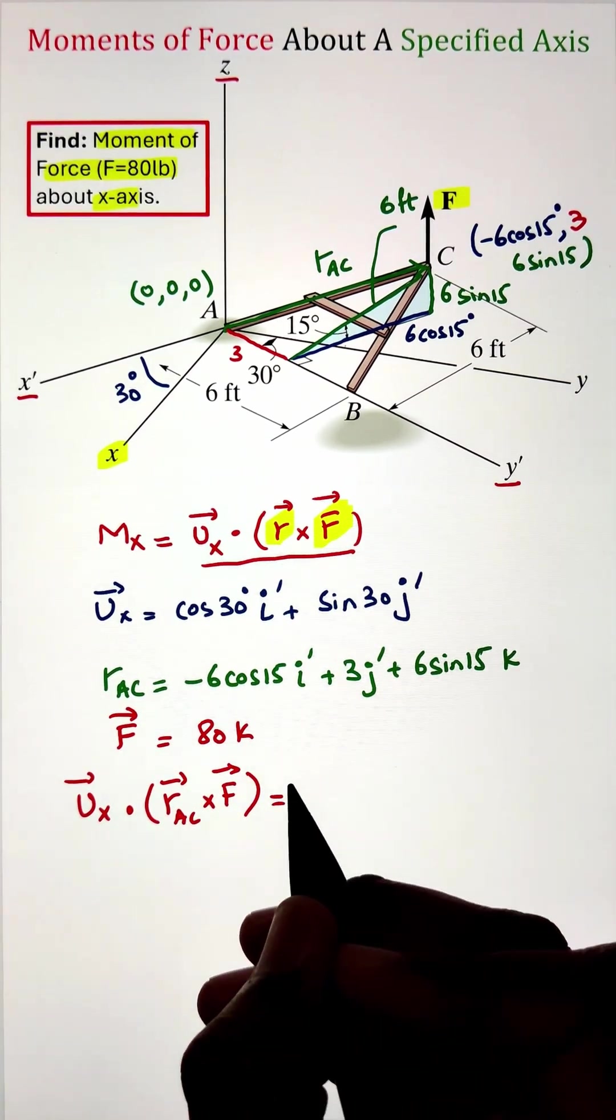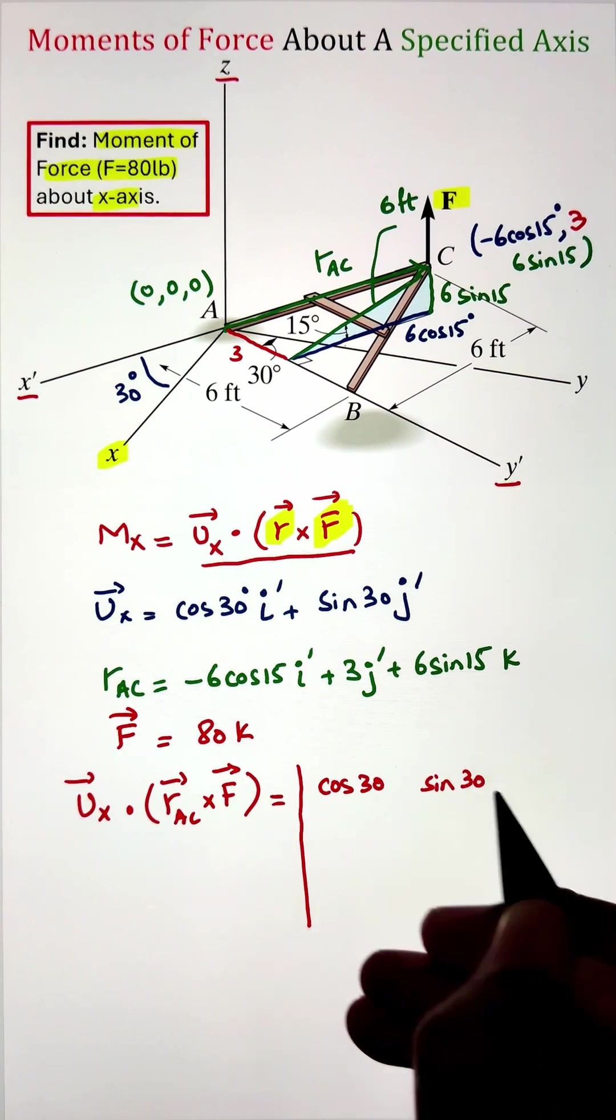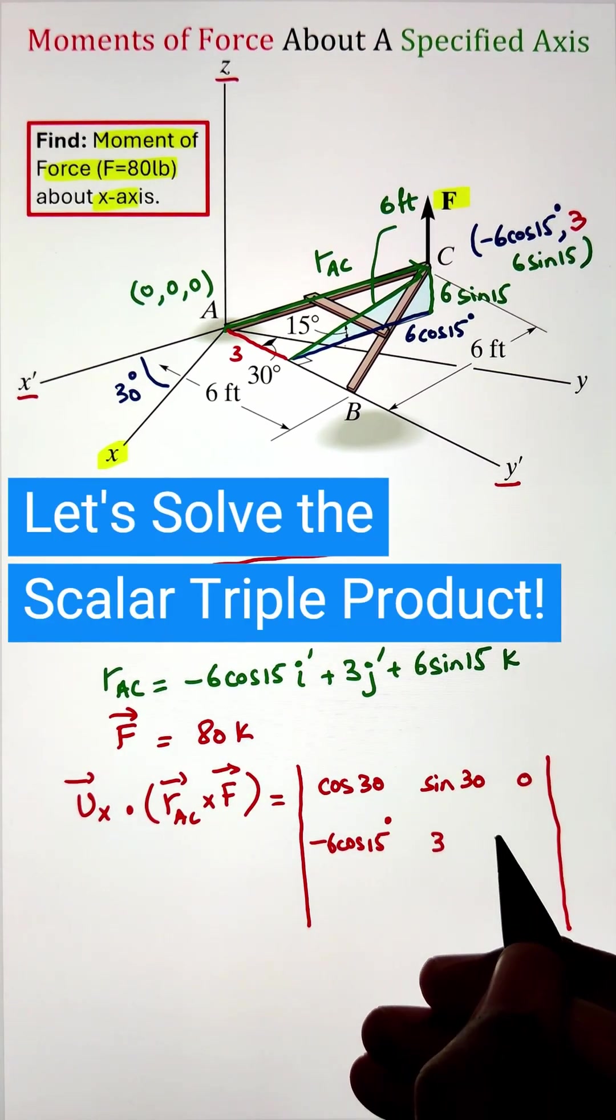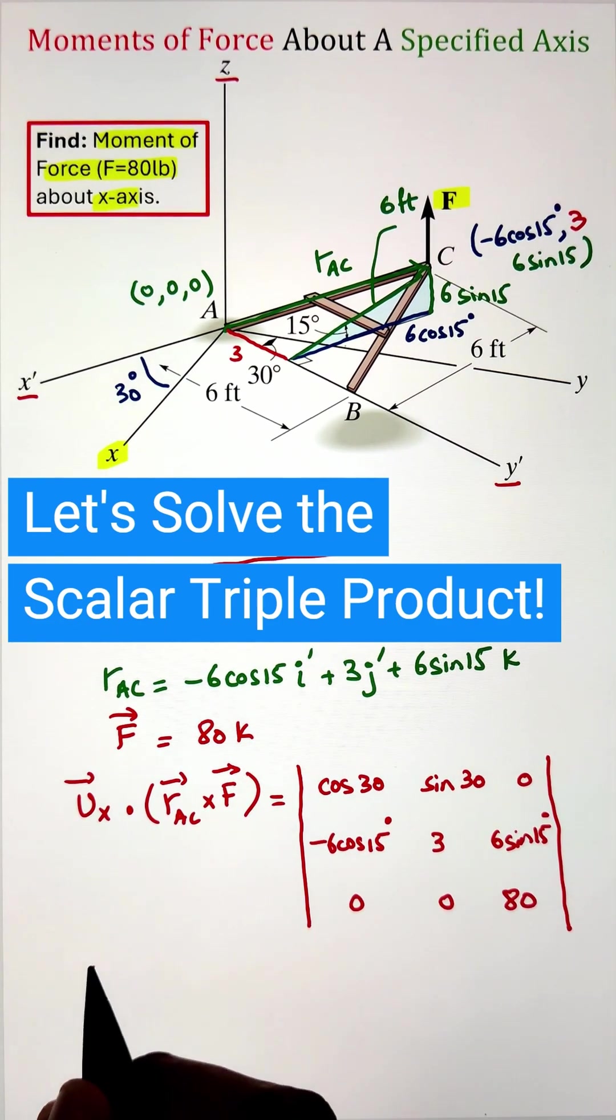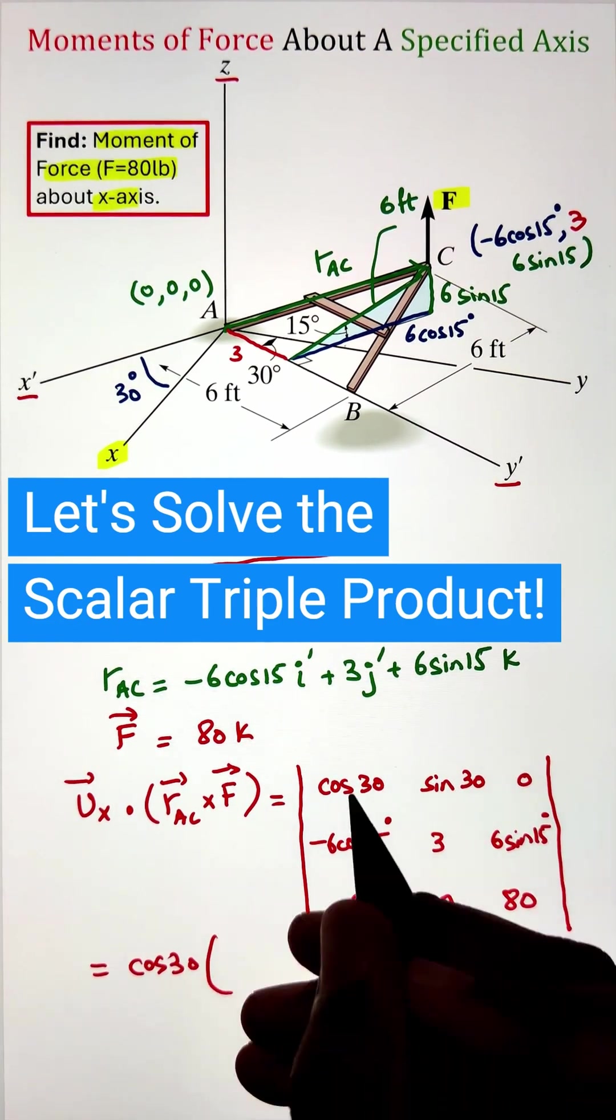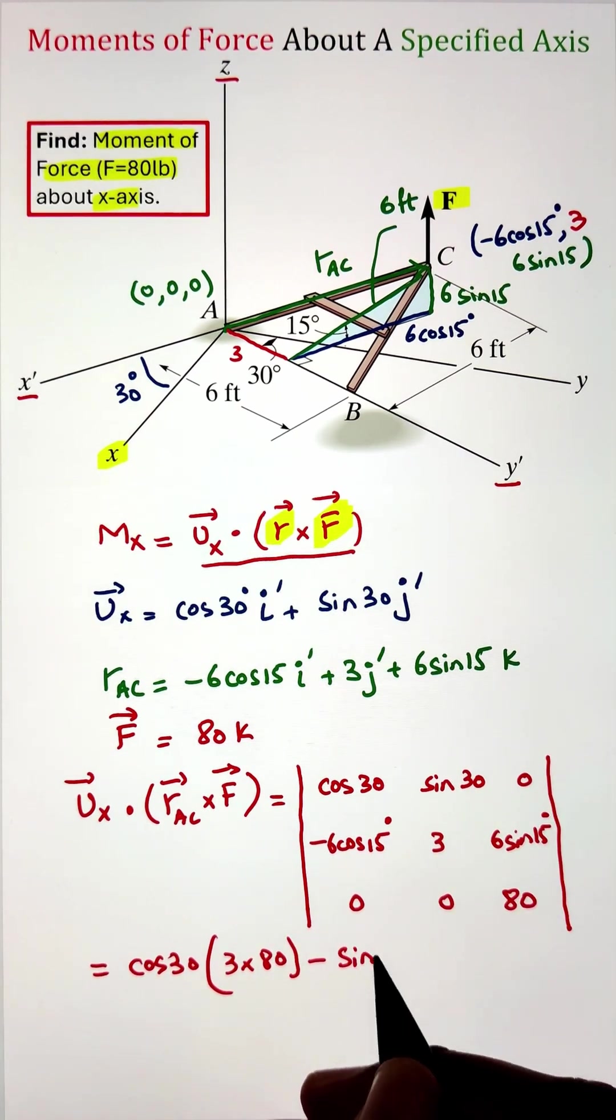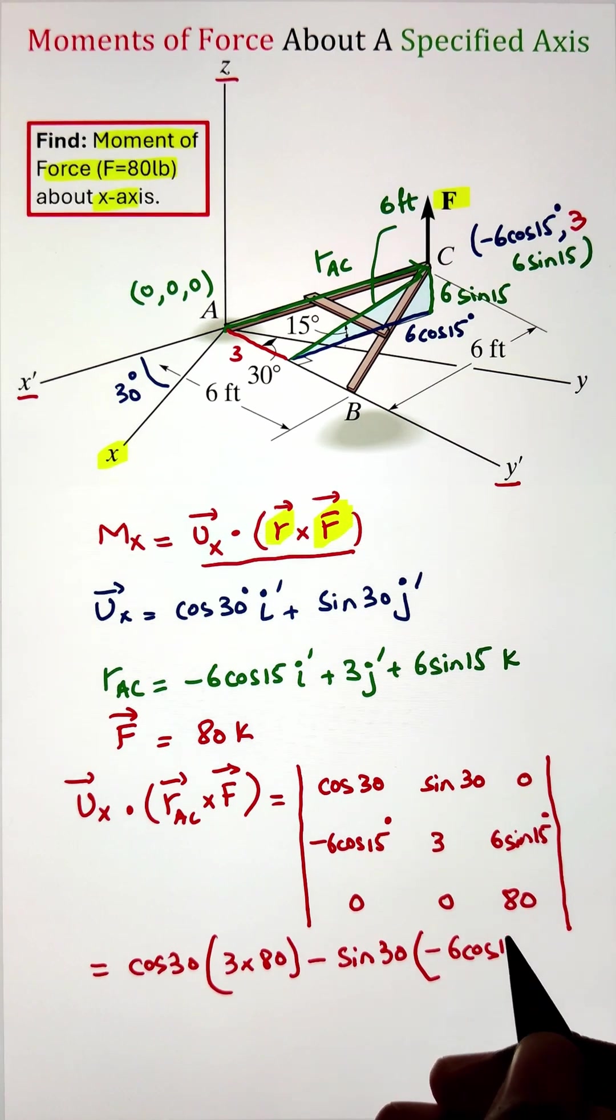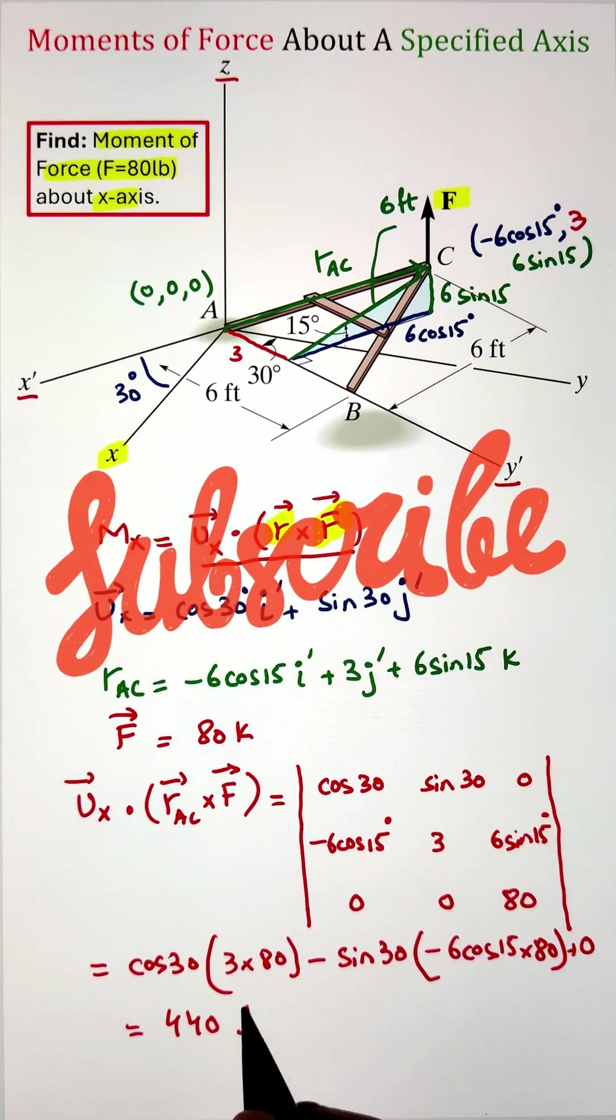Once we have all three vectors, let's plug that information into our expression. Our triple scalar product can be calculated using a determinant function in which the first row represents the unit vector of the axis across which we are calculating the moment, whereas the second row is our position vector and the third row of that determinant is the force vector. Next we can simplify that determinant to get our final moment that is coming as 440 pound-feet.